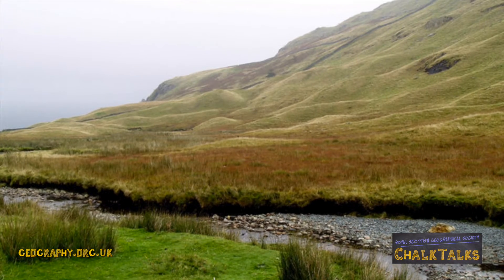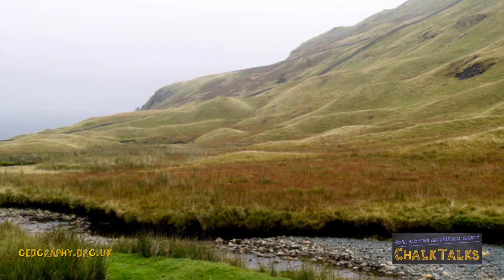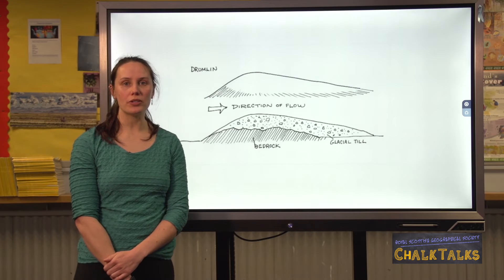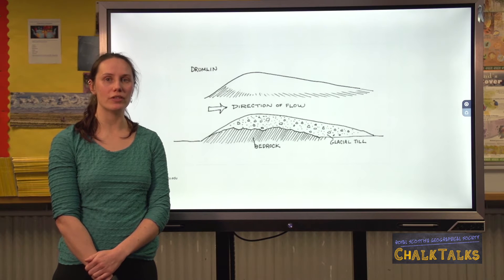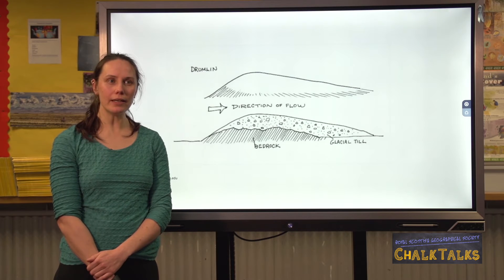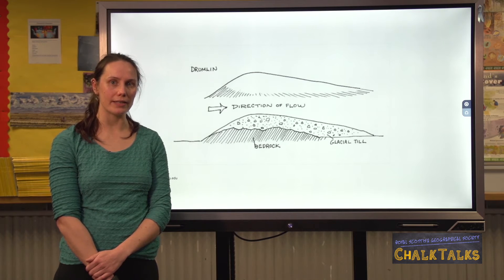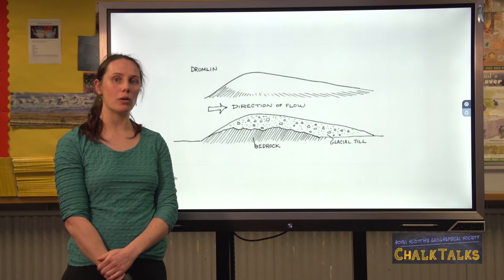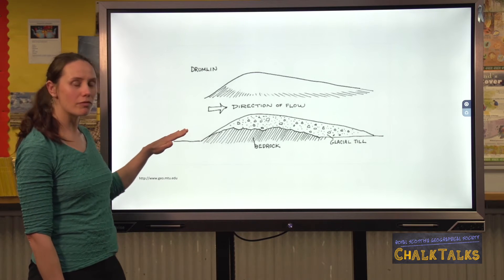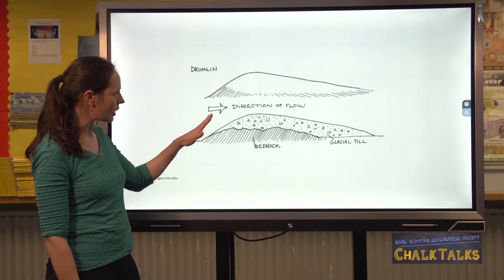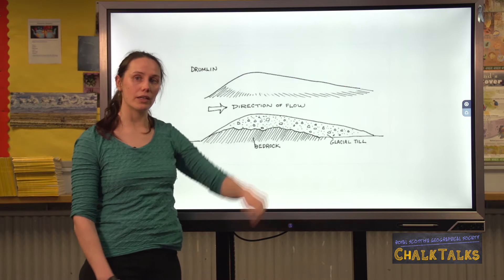As drumlins are depositional features, you may want to start your answer with the glacier moving downhill under gravity, carrying lots of moraine. Drumlins are made up of unsorted material with a varying range of sizes, deposited directly by the glacier. The material is also quite angular as it doesn't undergo much attrition during transport. However, as there's lots of meltwater around, the material is easily shaped and moulded by later movements of the glacier, resulting in the characteristic shape of a drumlin with a steeper stoss side and a gentler lee side.